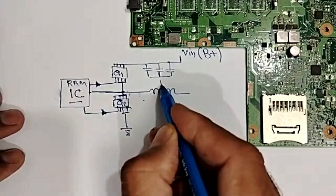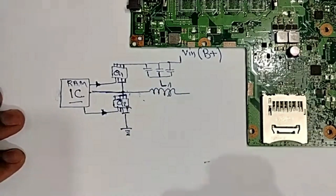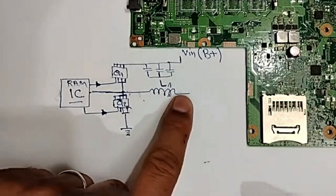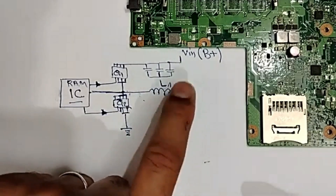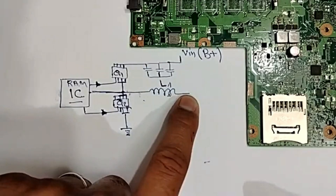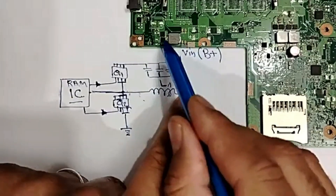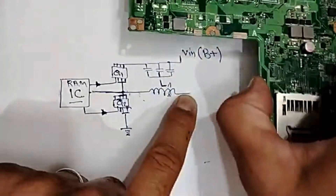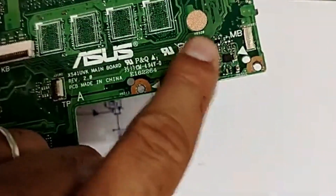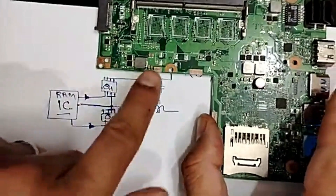This is L1. After that, we need here an electrolytic capacitor or a tandem capacitor. Let's check — we don't have it on this side. Let's see the other side.